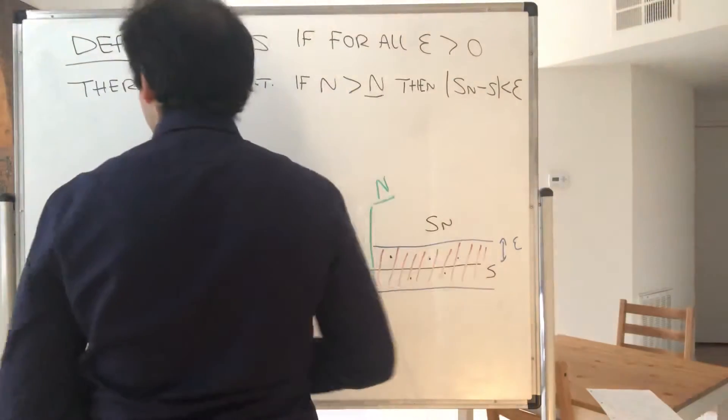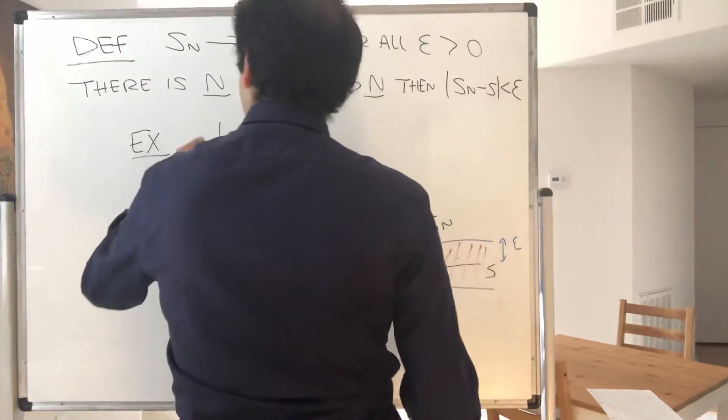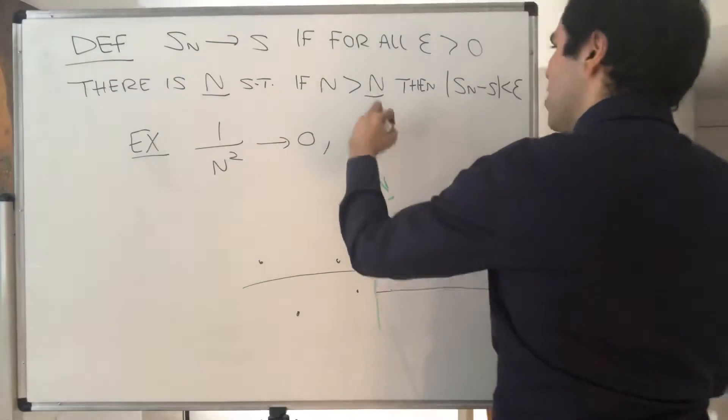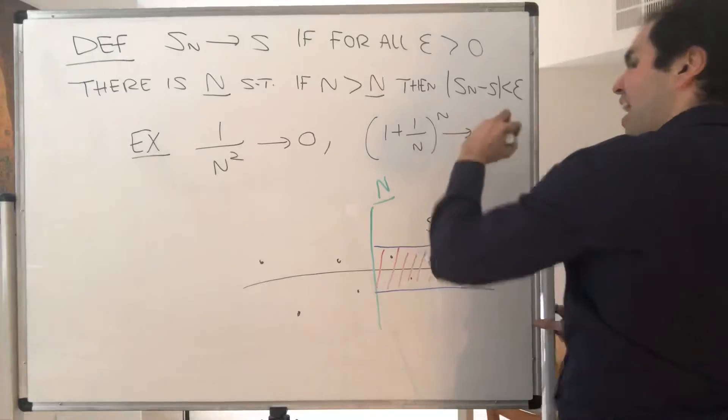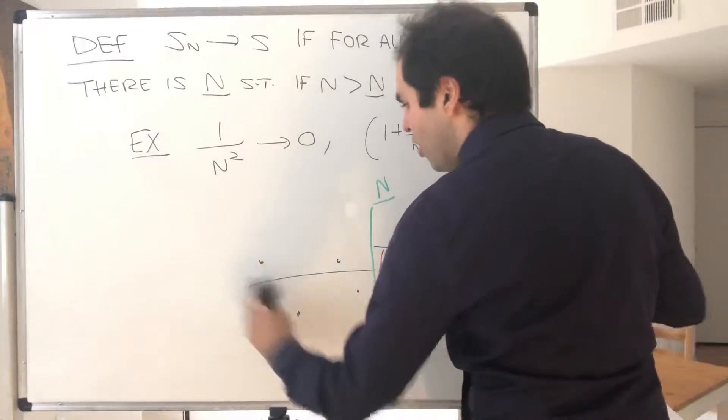Using that definition we can prove familiar limits such as 1 over N squared goes to 0 as n goes to infinity, or 1 plus 1 over N goes to E as n goes to infinity.